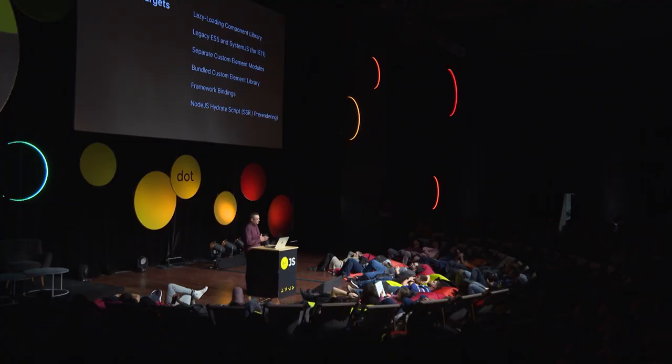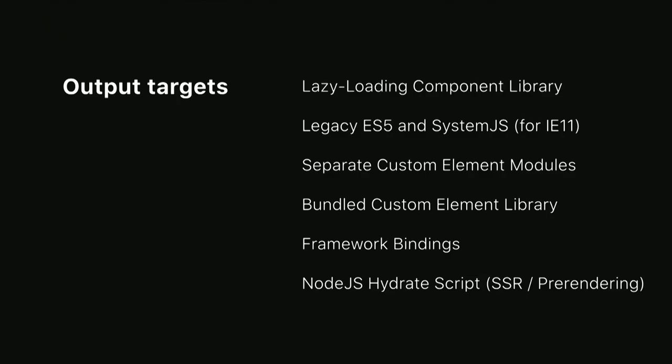I've mentioned output targets a few times, so I'd like to explain further. We're able to take the same source code and generate numerous builds. The default one being custom elements that can lazy load themselves. But we also generate differential builds that use ES5 and SystemJS so that the same components can work inside of IE11. But the last two — framework bindings and a no-JS script for server-side rendering and pre-rendering — I think are the coolest ones.